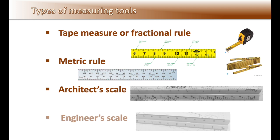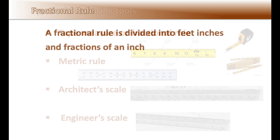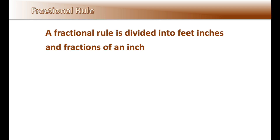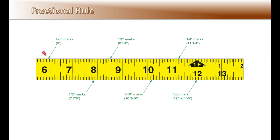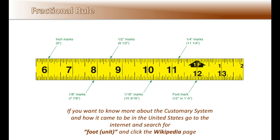An architect's and engineer's scale are also used to measure drawings. A fractional rule is divided into feet, with every foot equaling 12 inches. Each foot is divided into inches, and inches are divided into fractions of an inch. In Unit 2, covering construction math, I describe how to add and subtract feet, inches, and fractions of an inch. This system is called the customary system and is mostly used in the United States because most materials are manufactured using it.